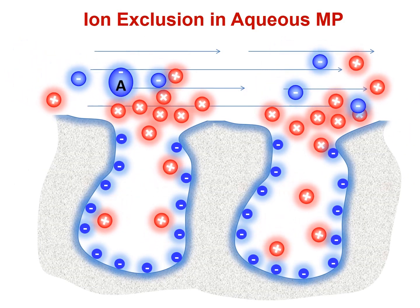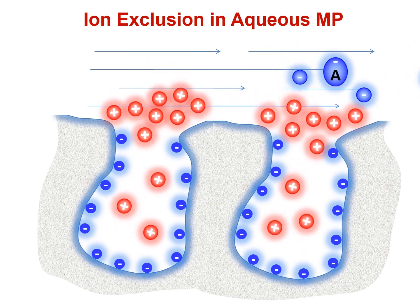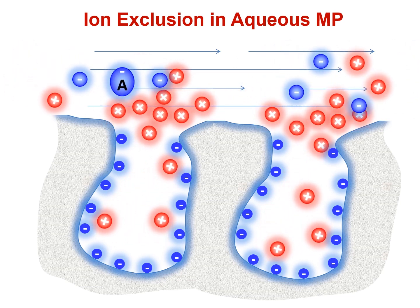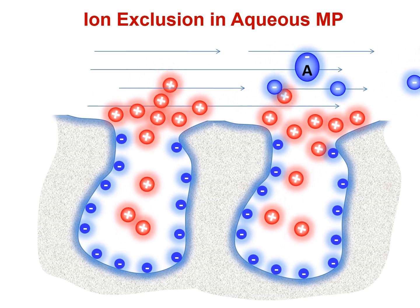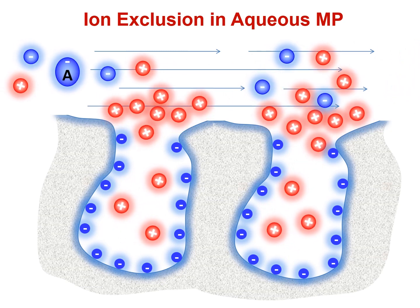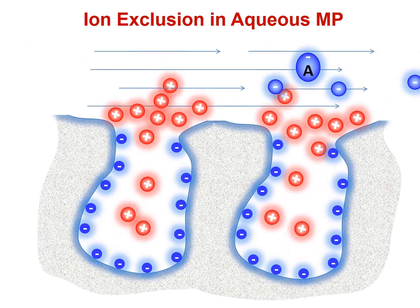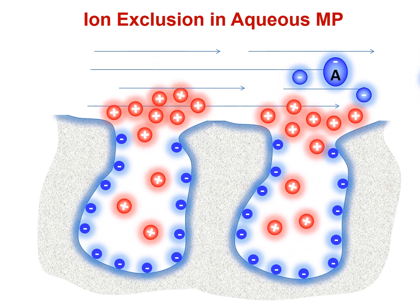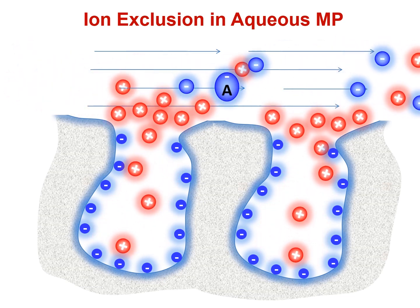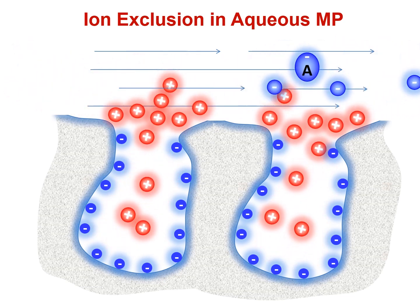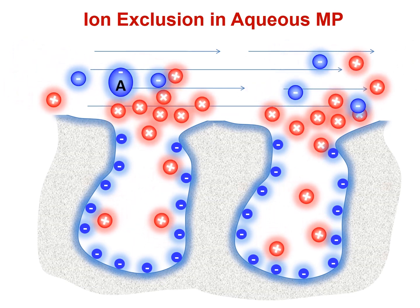A different mode of separation called ion exclusion is based on the interaction of identically charged ions and the stationary surface. In this situation, the modifier ions form a barrier and the analyte avoids entering the pores of the stationary phase while they travel down the column in the bulk mobile phase flow. This phenomenon exhibits itself as pre-void elution of the analytes.